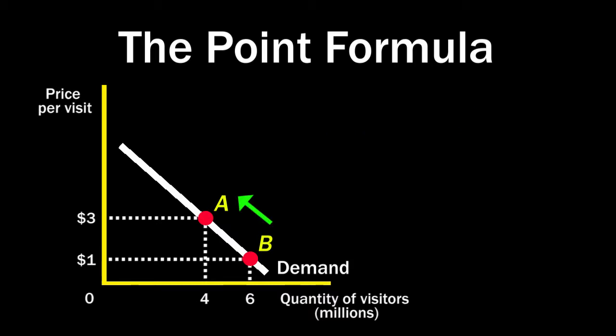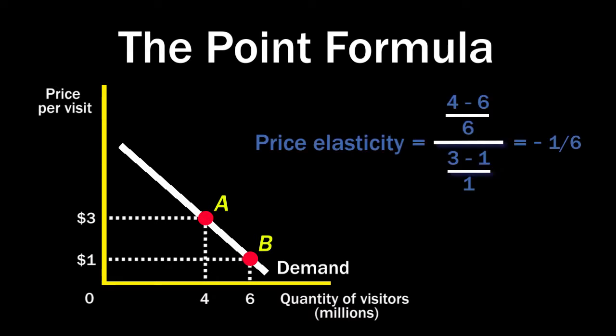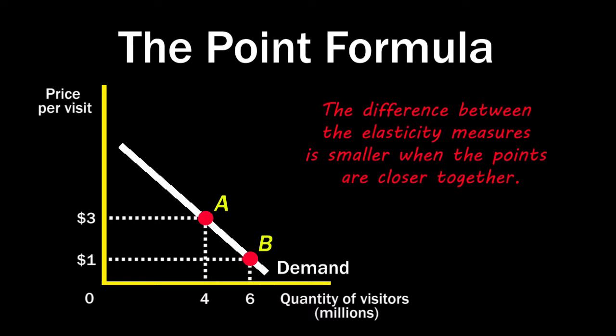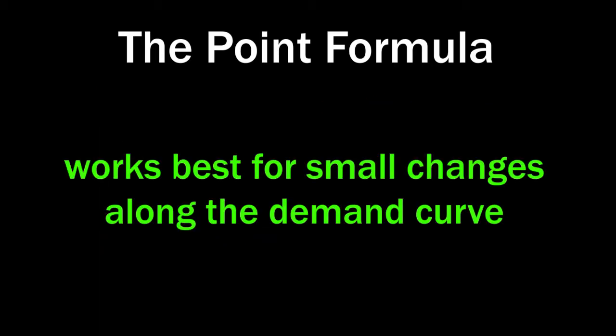That is, going from point B to point A, the price elasticity would be calculated this way, to find an elasticity of 1 sixth. The difference between the elasticity measures found by going in different directions along the demand curve is smaller when the two points are closer together, so this formula is great for looking at tiny changes along the demand curve.